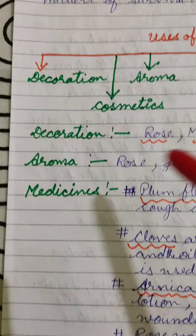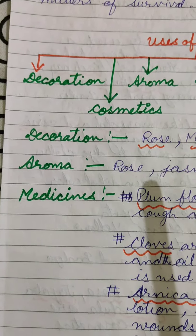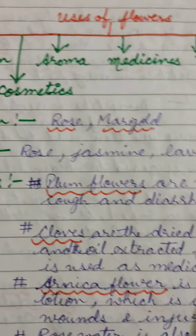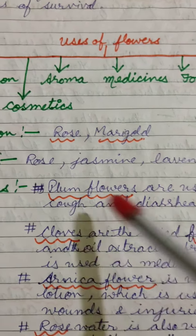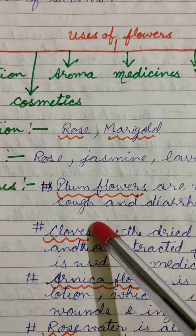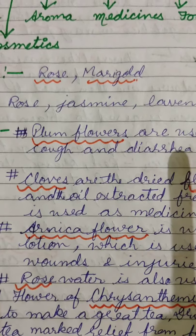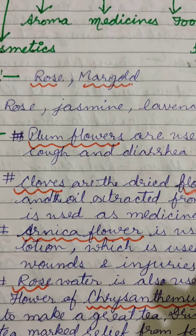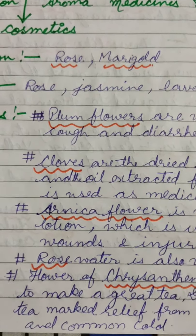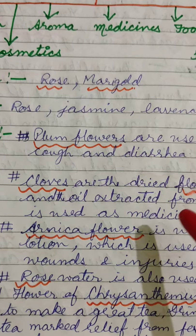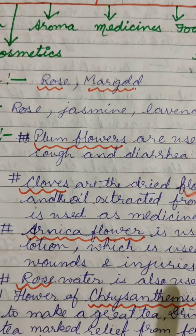A very important use of flowers is their medicinal use. Various flowers are used for making different types of medicine. Plum flower is commonly used to cure cough and diarrhea. You are familiar with clove, which is used as a spice in the kitchen — it is a dry flower bud, and oil extracted from it is also used as a medicine. The arnica flower is used for making a lotion that is used to cure wounds and injuries.